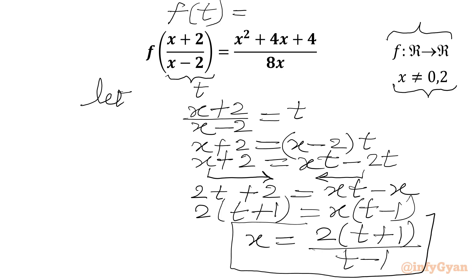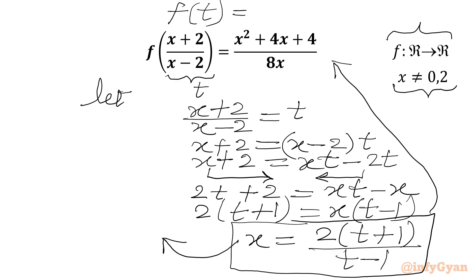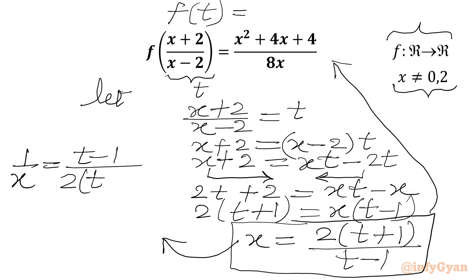We are going to plug this x into our RHS, which is not going to be easy. So I will calculate 1/x by taking the reciprocal of both sides — flipping numerator and denominator — to get 1/x = (t−1)/(2(t+1)).